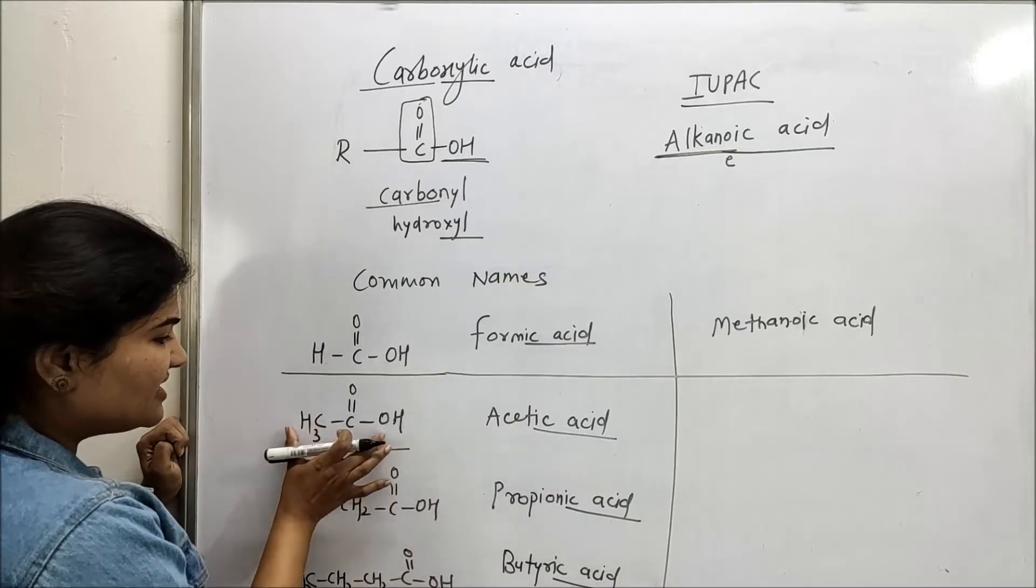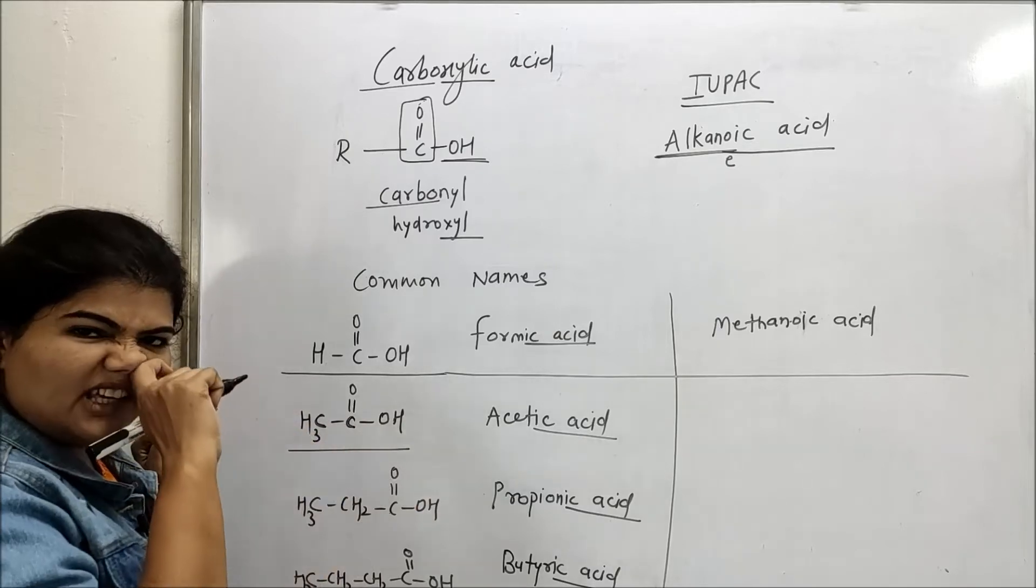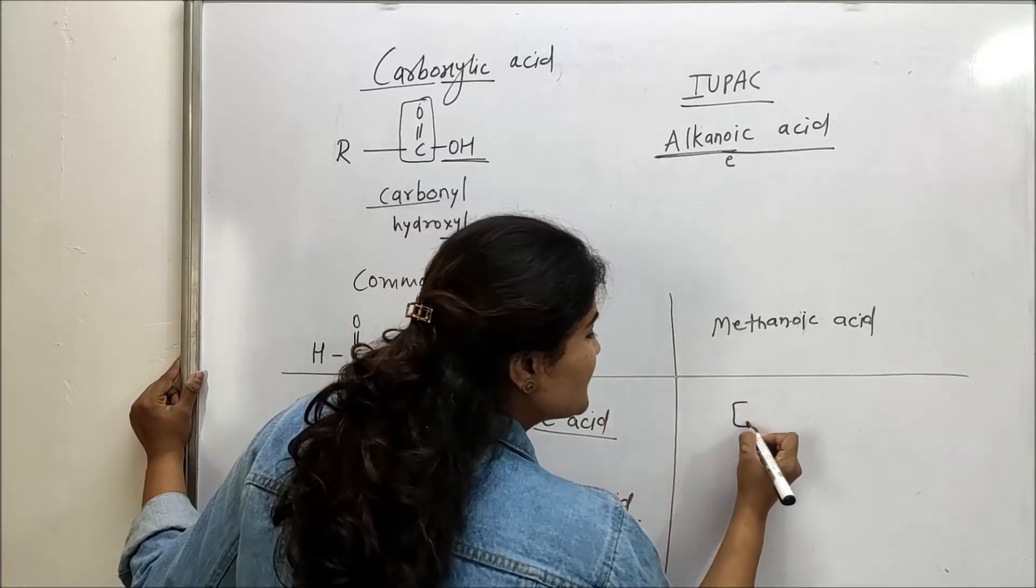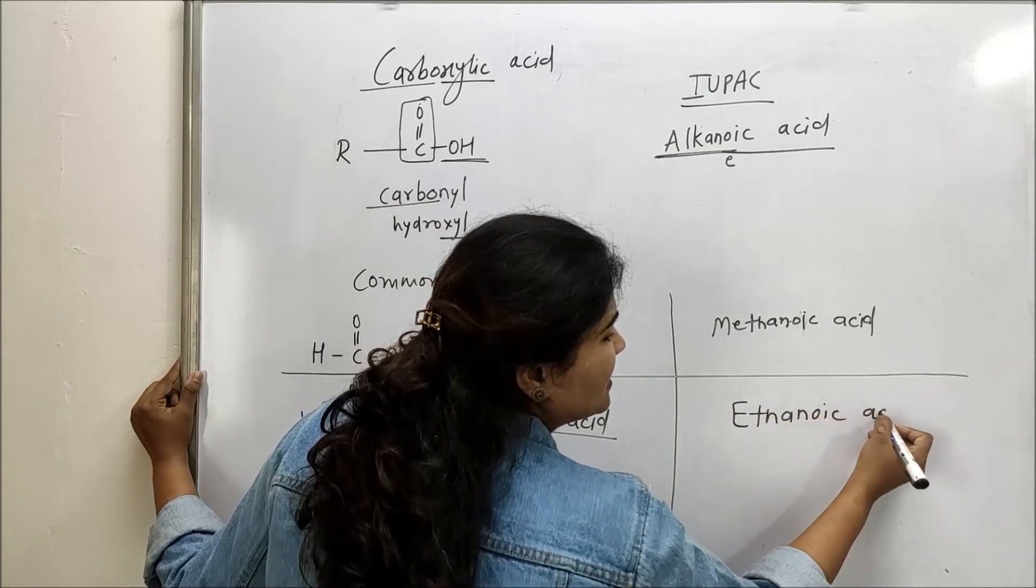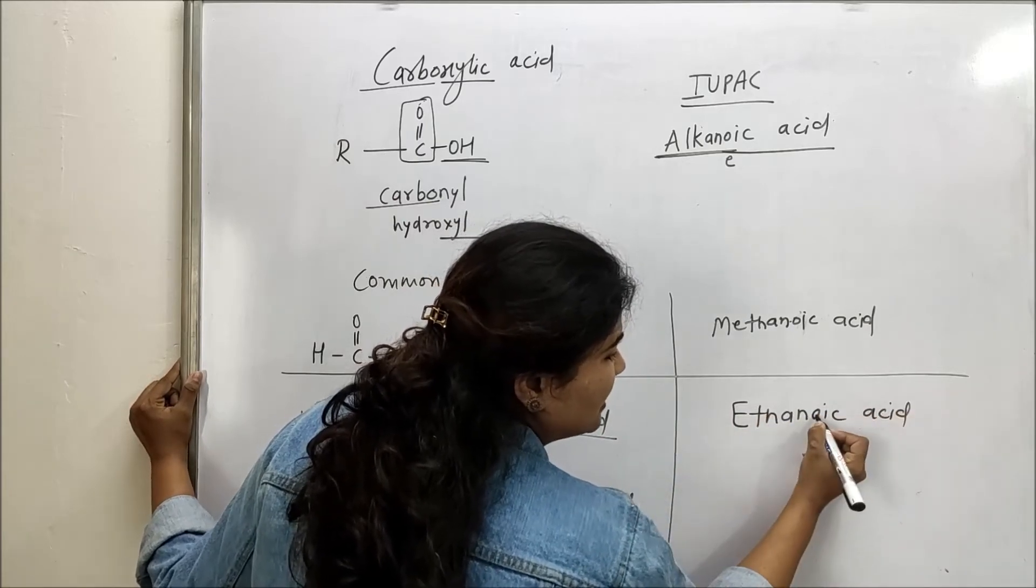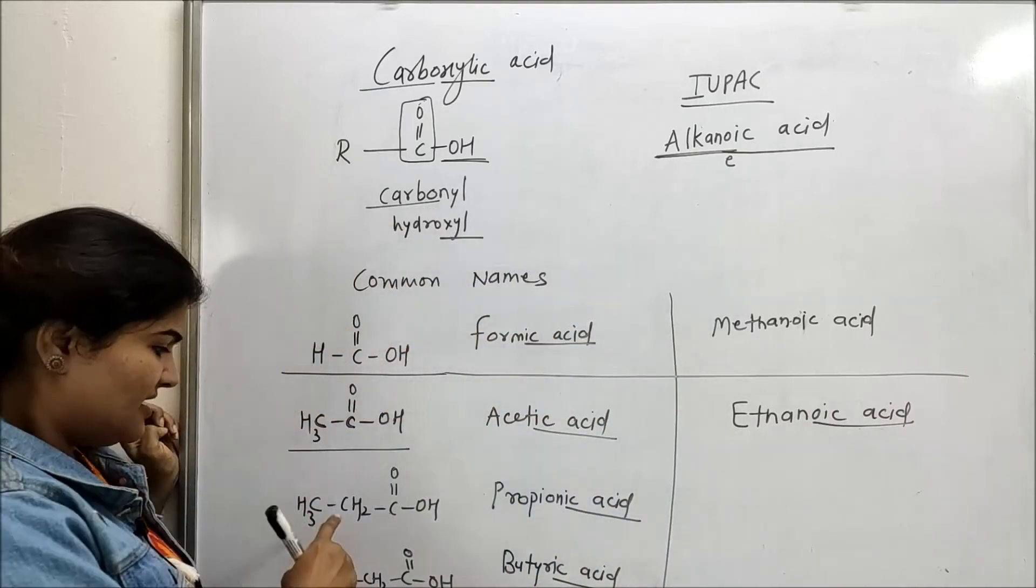Similarly, come here. Here there are two carbon atoms. So parent must be ethane. So the name becomes ethanoic acid. E of ethane is replaced by OIC acid.